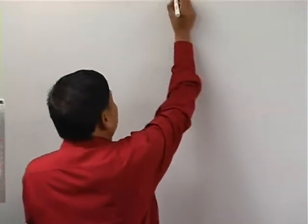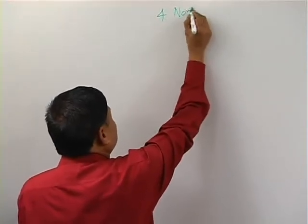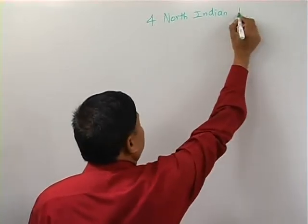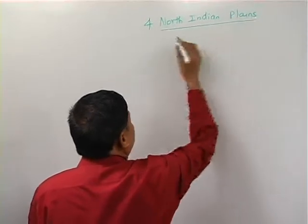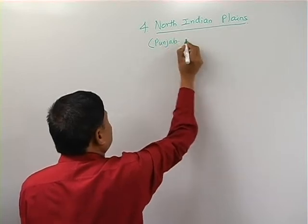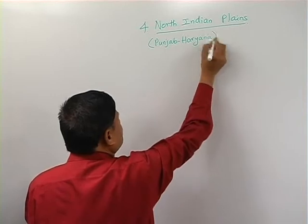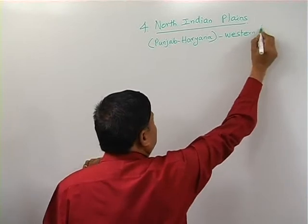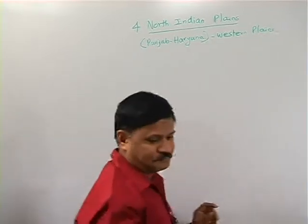The Punjab-Haryana plain is also known as the Western plains. This plain is one of the fertile plains in India. It is found to the west of the Yamuna river and north of Rajasthan. This plain has a very rich ancient past, and here we can see some of the Indus Valley civilization sites.